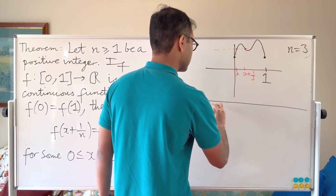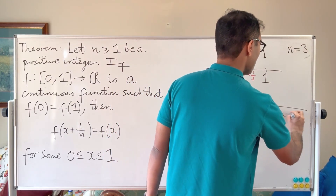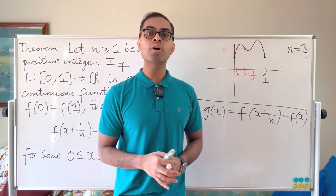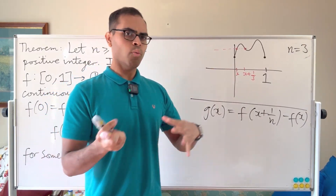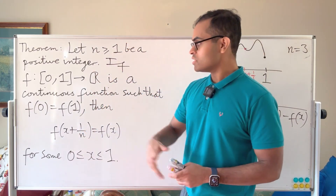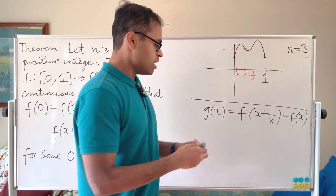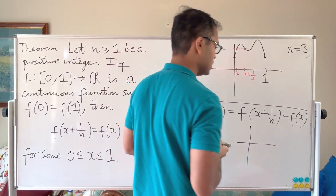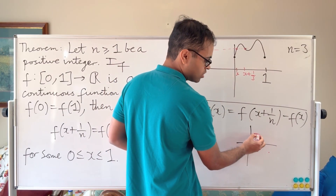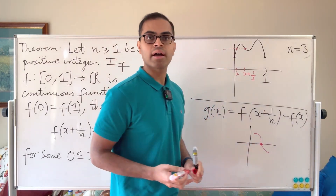In this case, we want to show that f(x + 1/n) equals f(x), so we consider the function g(x) = f(x + 1/n) − f(x). We now want to show that g(x) is zero somewhere, so we're interested in the sign of g(x). If we can show it is somewhere positive and somewhere negative on [0,1], then since g is continuous on [0,1], we can apply the intermediate value theorem to conclude it cuts the x-axis somewhere.